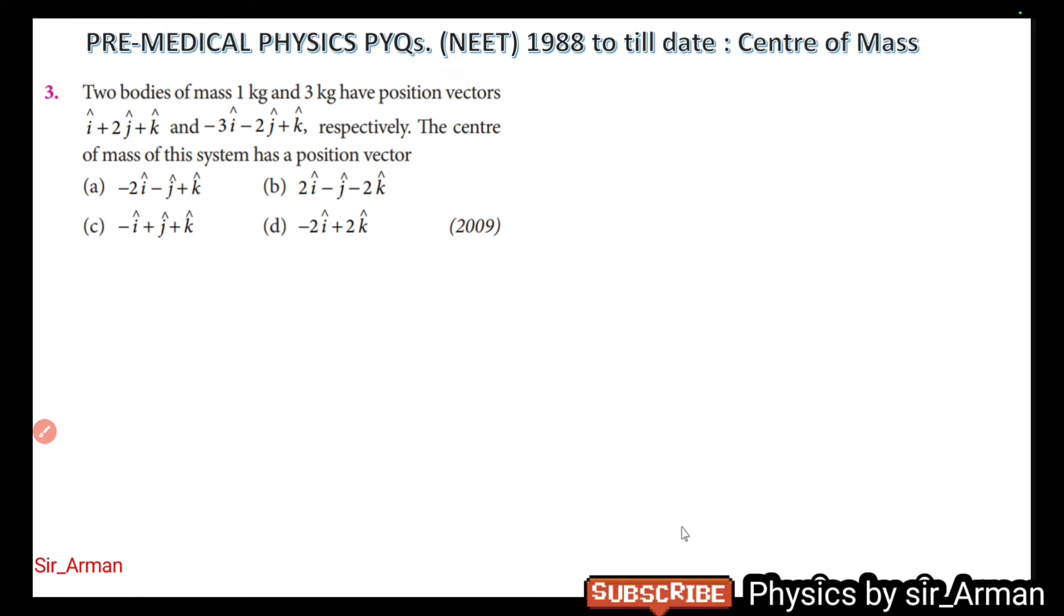In this question we have two bodies, 1 kg and 3 kg, and their position vectors in three dimensions (x, y, and z axis) are given. This question is very easy. We have to find the position vector of the center of mass—that is, from origin where the center of mass is lying.